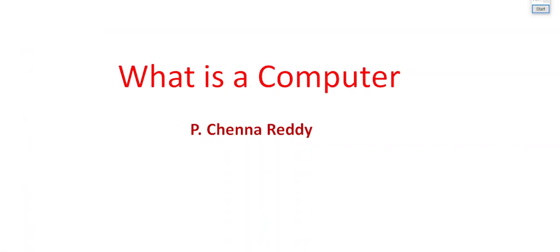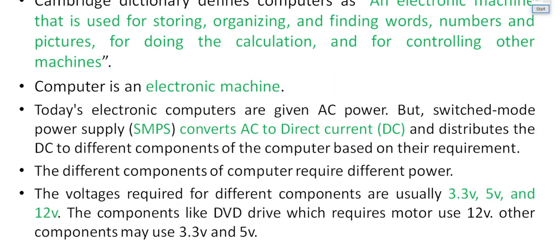Welcome to 'What is a Computer.' You might have heard about computers, you might have used a computer, but what exactly is a computer technically? Cambridge Dictionary defines a computer as an electronic machine that is used for storing, organizing, and finding words, numbers, and pictures, for doing calculations, and for controlling other machines. So it's an electronic machine — but what is an electronic machine?